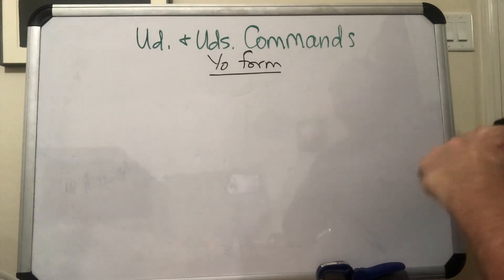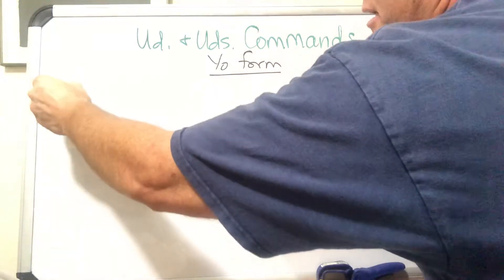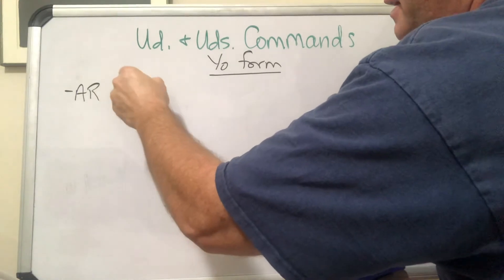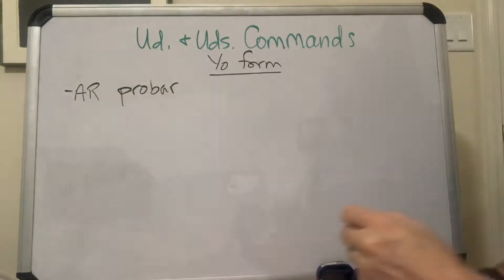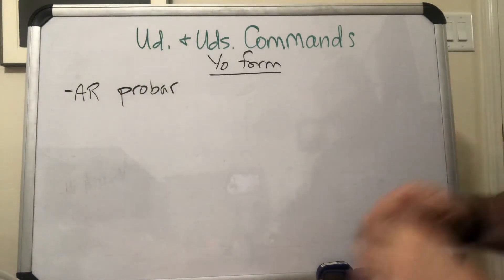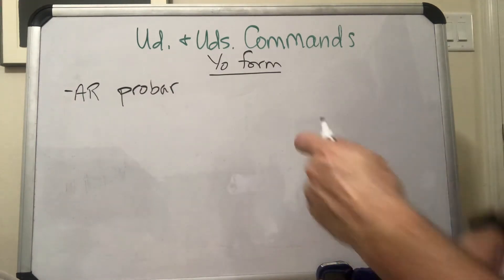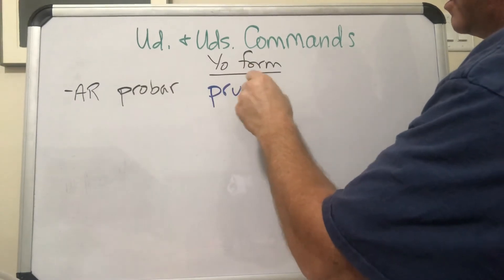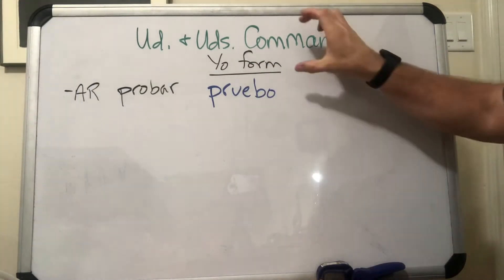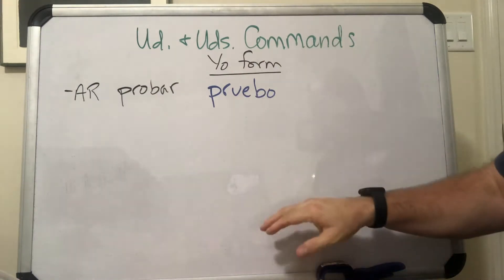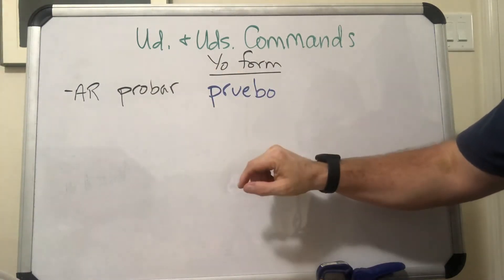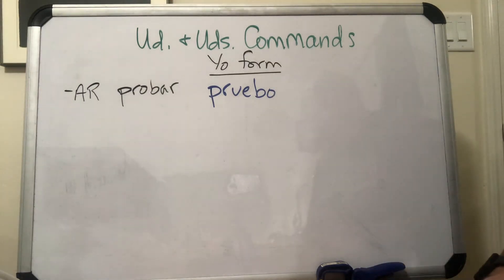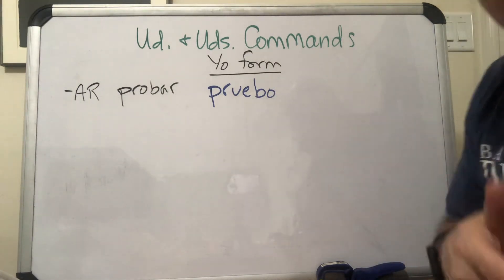So let's talk about AR verbs. Let's do the verb 'probar' — that's on your vocab list, it means to try or to taste. It's a stem changer, O to UE, so my yo form is 'pruebo.' You have a lot of these command forms that all use the yo form, so no matter what the verb does in the present tense to change it to the yo form, that's the one we're going to use.